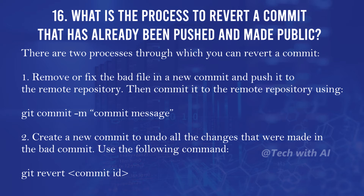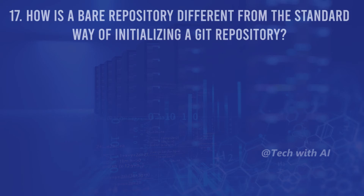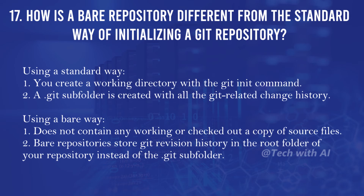The command for reverting is: git revert [commit-id]. How is a bare repository different from the standard way of initializing a Git repository? Using the standard way, you create a working directory with the git init command and a .git subfolder is created with all the Git-related change history. Using the bare way does not contain any working or checked-out copy of source files; bare repositories store Git revision history in the root folder instead of the .git subfolder.